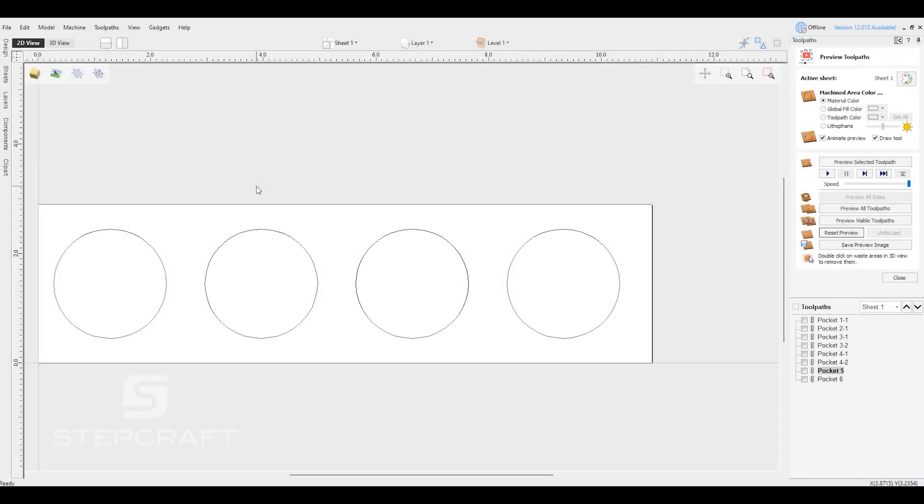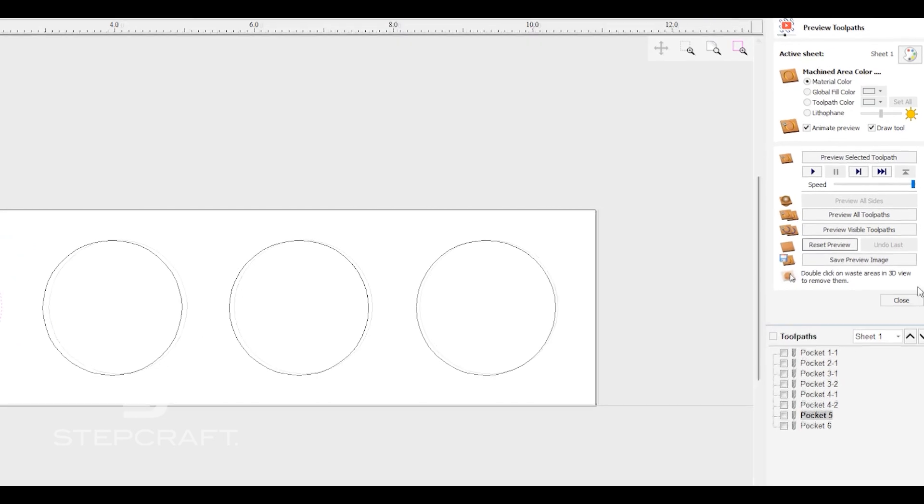Quick tip about cutting pockets with a ball bit - there's a little gotcha that can get you in trouble and ruin your project. Here we have four circles, and we're going to progressively get closer to getting this right. On the first circle, we're going to select it.